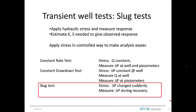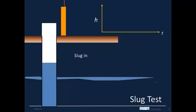In order to conduct the slug test, we'll change the drawdown or the head in the well suddenly and measure how the well responds to that change in head. Here's a schematic of what's going to happen. This is the well, and the well is intersecting a permeable layer.